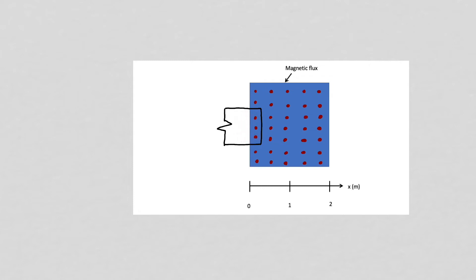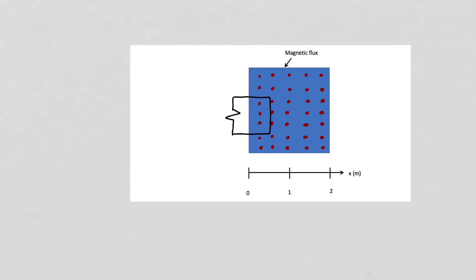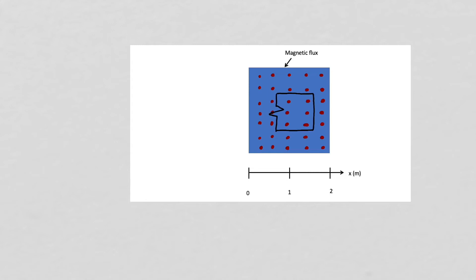Since the magnetic flux out of the page inside our circuit is increasing, Lenz's law tells us there will be an induced current to produce a magnetic flux into the page inside our circuit. If we point our right thumb in the direction of current flow, our fingers curl in the direction of the magnetic flux. So if current flows clockwise, the induced magnetic flux will be into the page — meaning as the circuit moves into the magnetic field region, we will have an induced clockwise current.